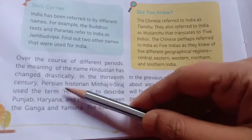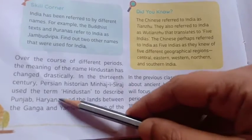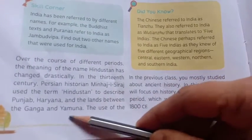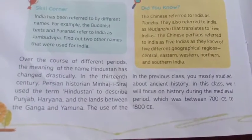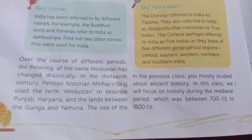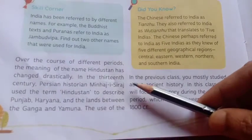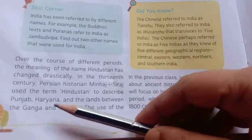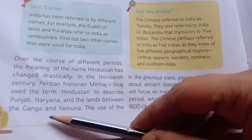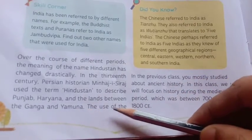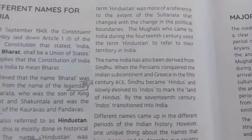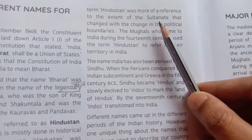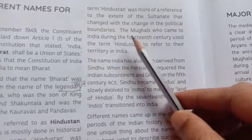In the 13th century, Persian historian Minhaj-i-Siraj used the term Hindustan to describe Punjab, Haryana, and the lands between the Ganga and the Yamuna. The use of the term Hindustan was more of a reference to the extent of the Sultanate, and changed with the change in political boundaries.